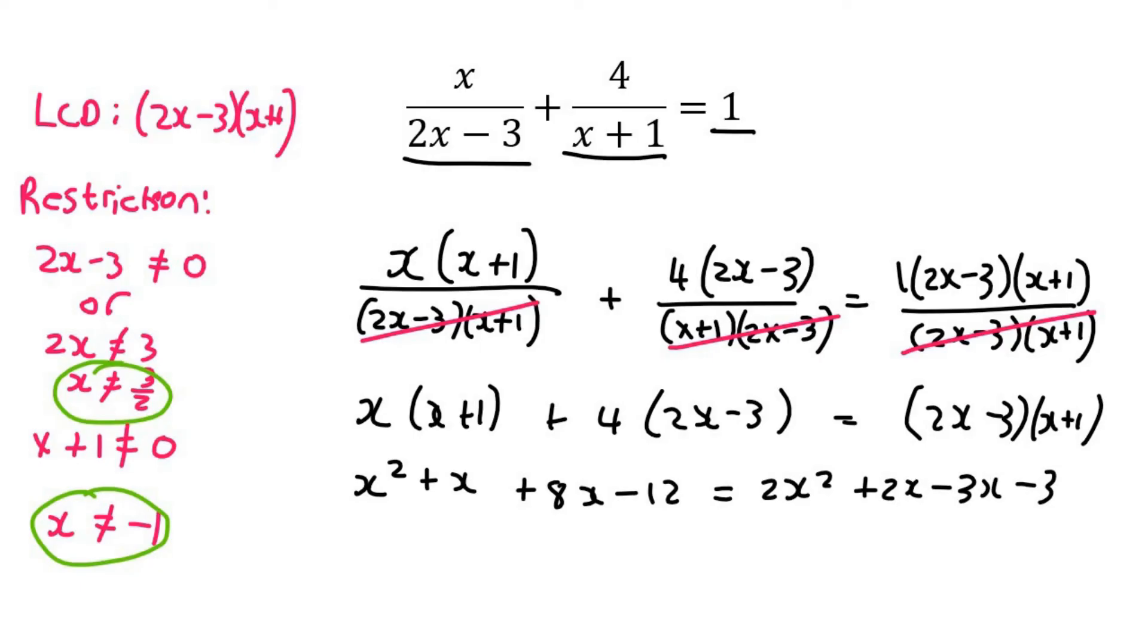I'm going to take everything to the right. So that's going to give us 2x squared minus x minus 3 minus x squared minus x minus 8x plus 12. And that's eventually going to give us x squared minus 10x plus 9.